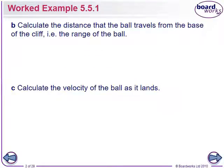Calculate the distance the ball travels from the base of the cliff, i.e. the range of the ball. So what we want to work out now, if our ball lands here, we want to work out the range, that distance, how far it travels. We could use our SUVAT equations, but there's a much easier way to do it. Remember that our speed stays constant, assuming we can ignore air resistance, which we can.